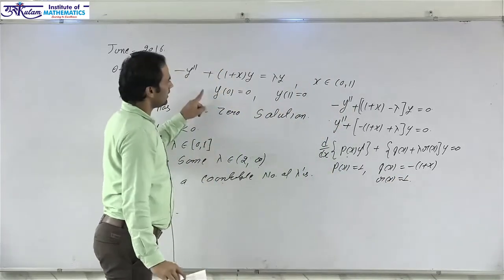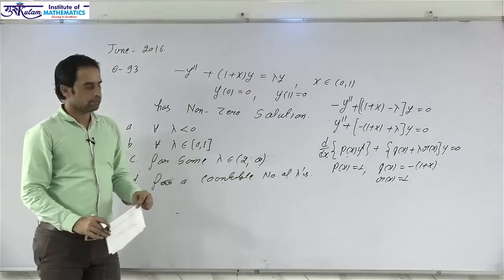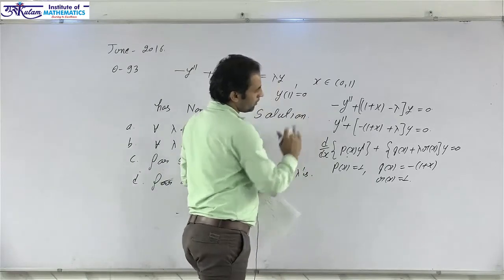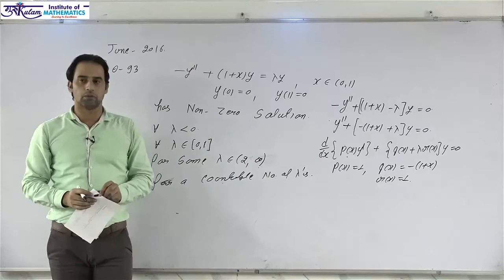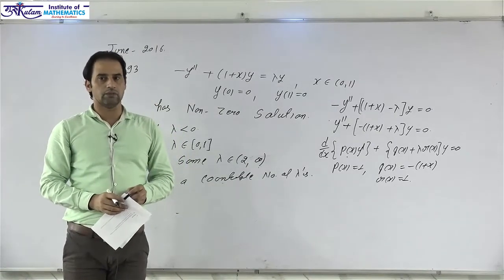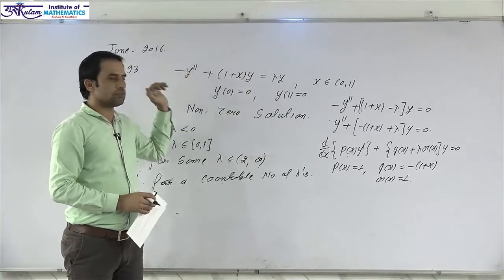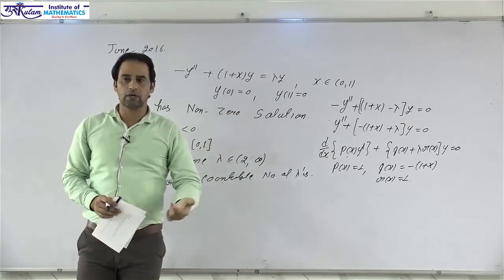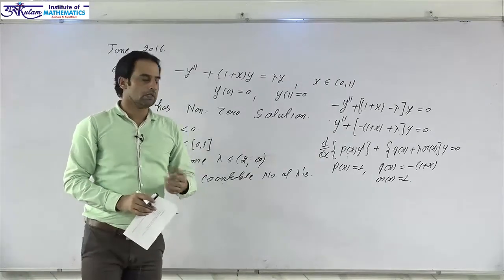The boundary conditions are of the second form. So this given boundary value problem is a regular boundary value problem, and we know that every regular boundary value problem has countably infinite number of eigenvalues. The set of eigenvalues is always bounded below and unbounded above.